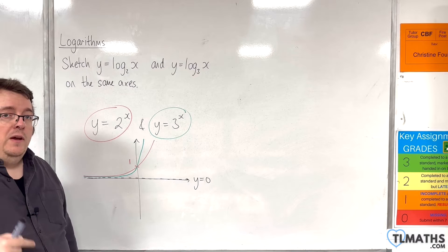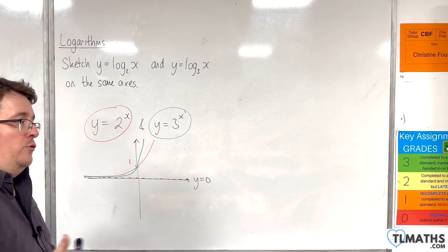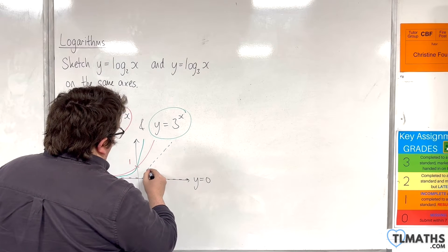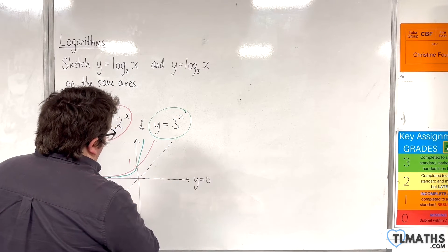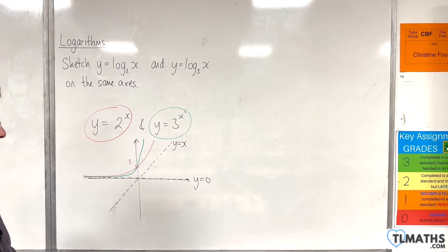Now, y equals log base 2 of x and y equals log base 3 of x are the inverse functions of 2 to the x and 3 to the x, respectively. So, they are reflected in the line y equals x.